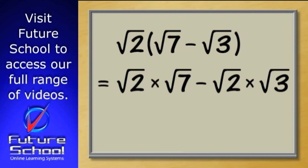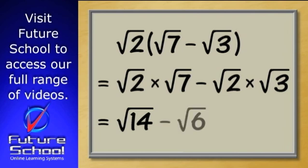We know the square root of 2 times root 7 can be written as the square root of 2 times 7 or root 14, and minus root 2 times root 3 can be written as minus root 6.